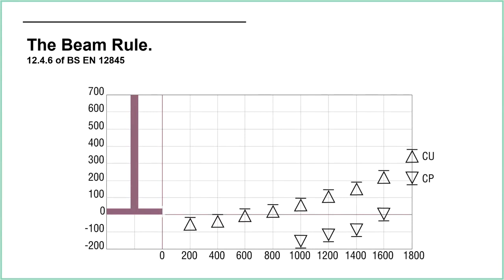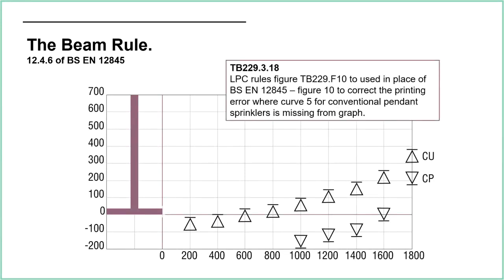One important note: there is a printing error in the graph at clause 12.4.6 — one of the curves is missing, specifically for conventional pendant sprinklers, which is quite an important one. This has been replaced by TB229 Figure 10, which is exactly the same graph but with that missing line added back in.